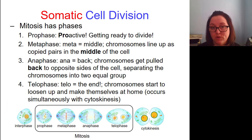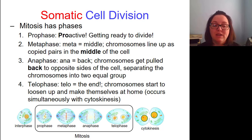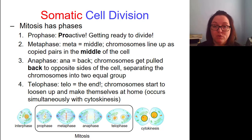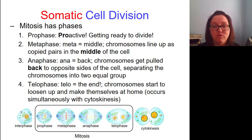Mitosis has certain phases to it: prophase, metaphase, anaphase, and telophase. Prophase is the first phase of mitosis — the cell is being proactive and getting ready to divide, doing things like breaking down its nuclear envelope so that the chromosomes can move around appropriately. Meta means middle, so metaphase is called middle phase because the chromosomes line up in the middle of the cell — you take all those 92 chromosomes and line them up in the middle so you can split them in half. Ana means back, so during anaphase the chromosomes get pulled back to opposite sides of the cell, separating them into two equal groups.